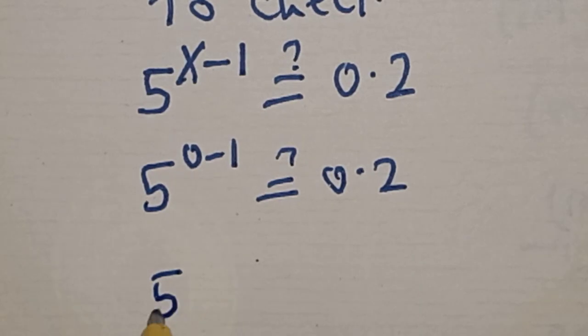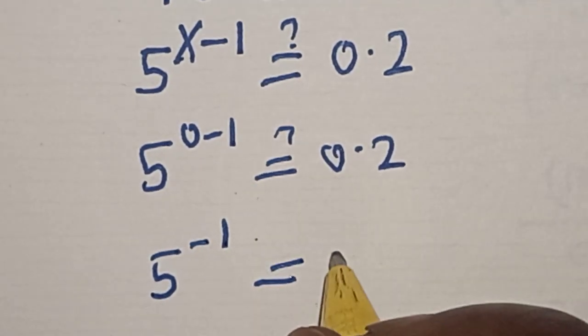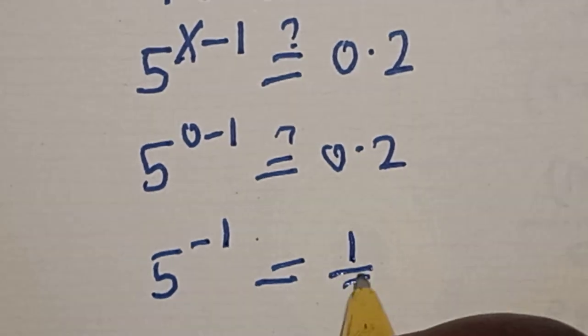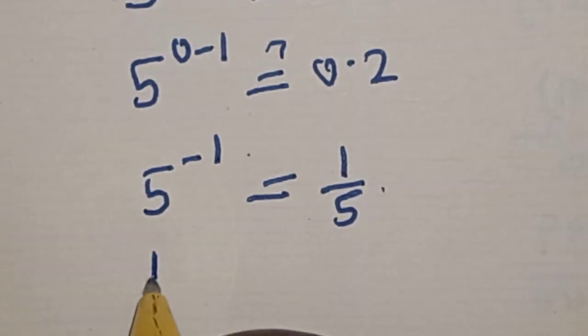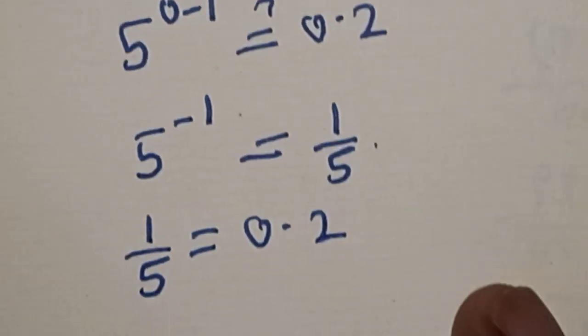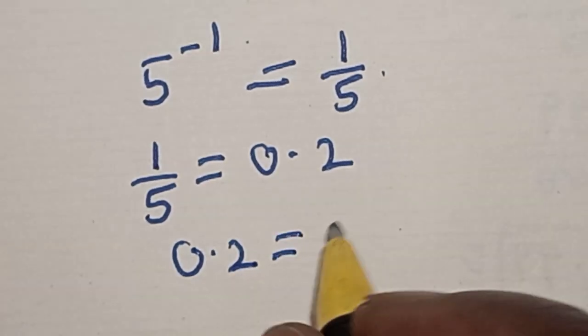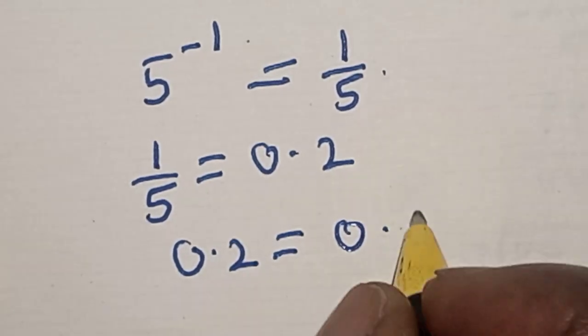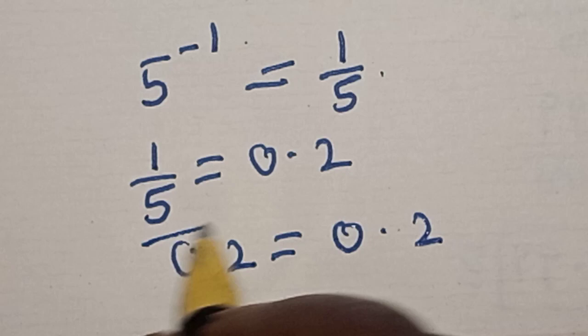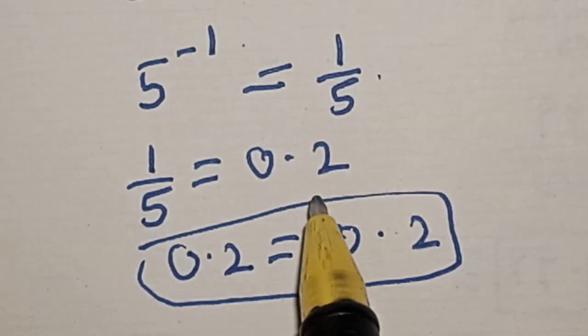Now this is 5 raised to power minus 1, then this is equal to 1 over 5, and we have 1 over 5 is equal to 0.2. In this case, the left answer 0.2 is equal to the right answer 0.2, which satisfies the given equation at x equal to 0.